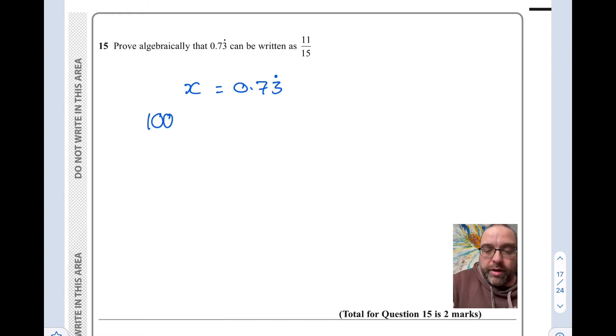So first off, I'm going to work out 100x. So I'm going to move the decimal point two places to the right. So that would give me 73.3 recurring.